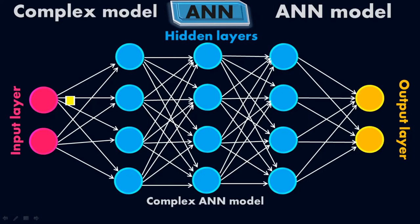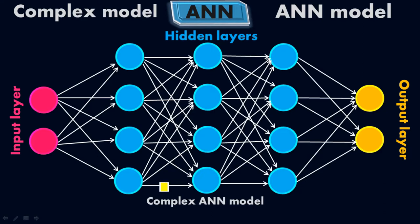You have to connect all four cells with the first input cell and then all four cells with the second input cell. Similarly, when you go ahead from this cell, in front of it we have again four cells in the second hidden layer. So you have to connect this cell with all four cells in the second hidden layer. Similarly for the second cell — in front of it we have again four cells, so you have to connect it with all four cells in the second hidden layer.